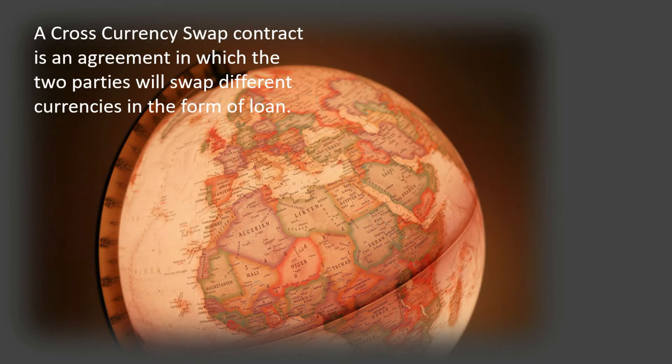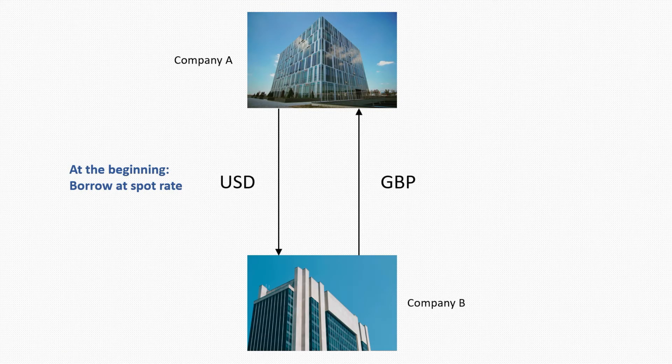Let's take a look at the following example. Company A needs pounds sterling, while Company B needs U.S. dollar. Therefore, they both entered into a cross-currency swap contract.